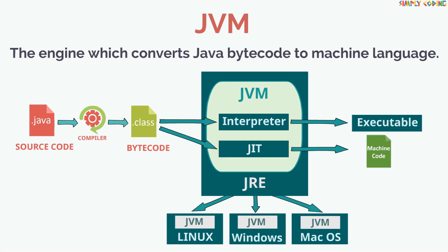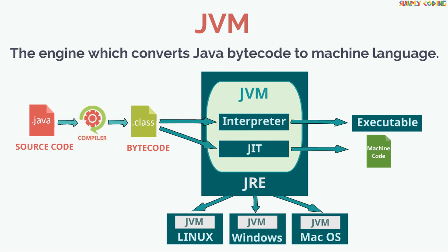Note that a Java program requires both a compiler and then an interpreter. First, a compiler to generate bytecode, and then an interpreter to convert to machine code. As bytecode could run on any machine which had JVM, this made Java programs highly portable.